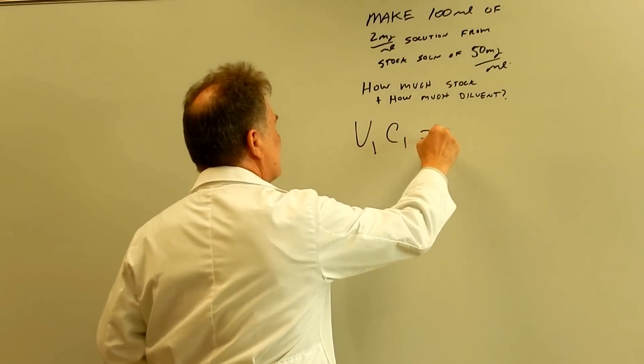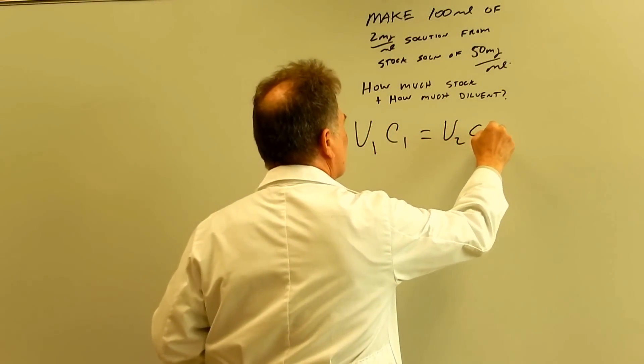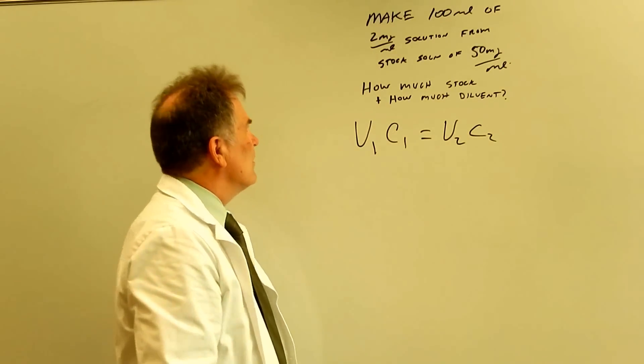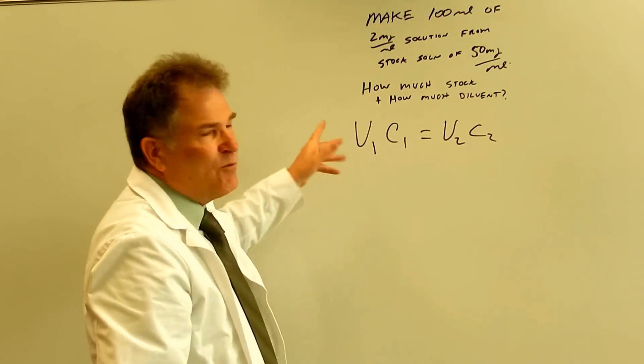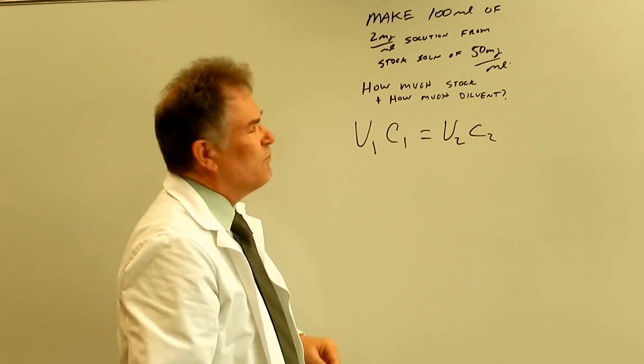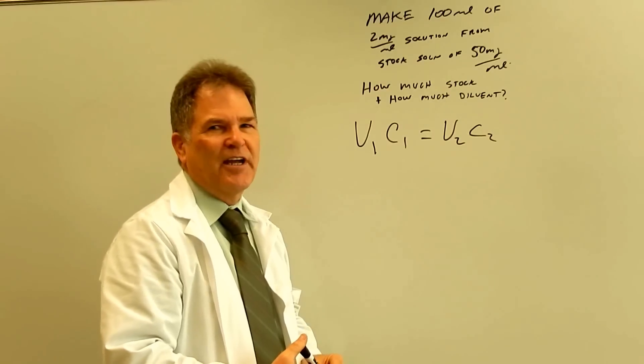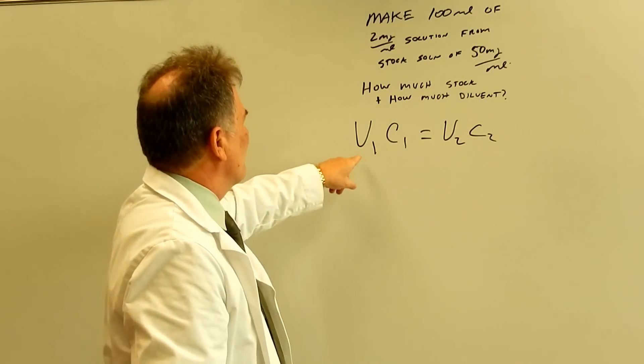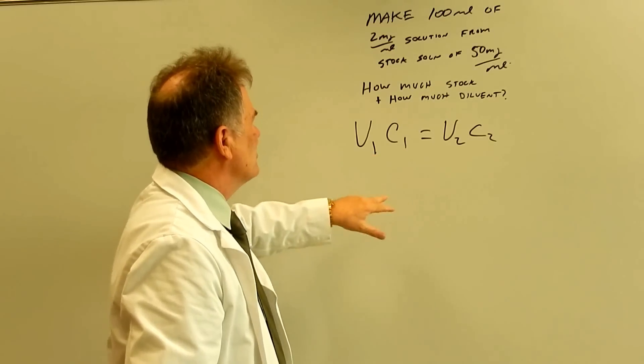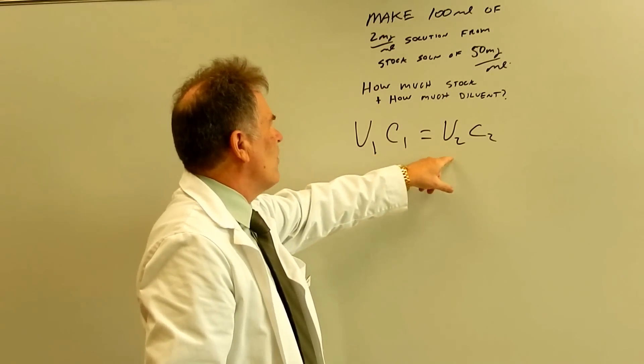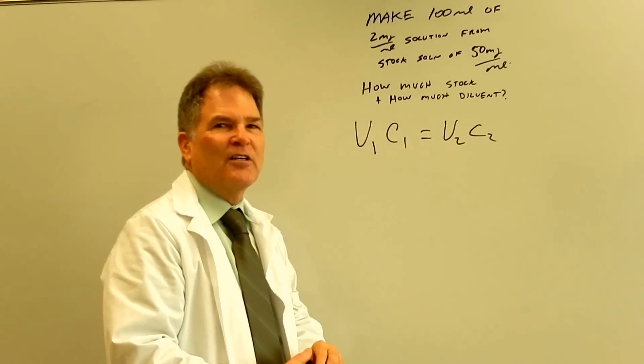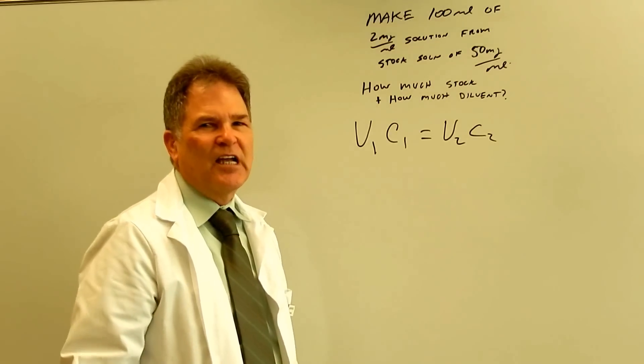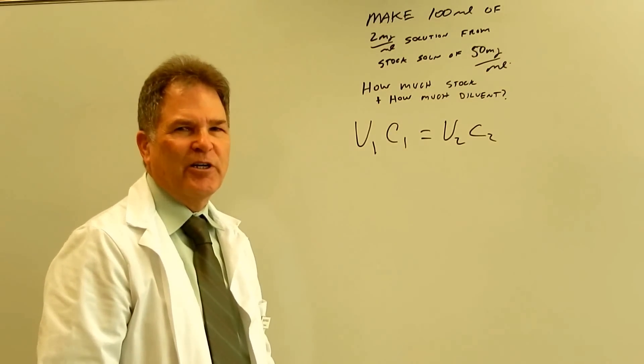I do tell them if they do want one formula, it really comes in handy. It's this one. Okay, so V1C1 equals V2C2. This is a really handy formula. Okay, before you use this formula, I would hope that you would work it out the long way just so you understand exactly what you're doing. But let me show you how this works.